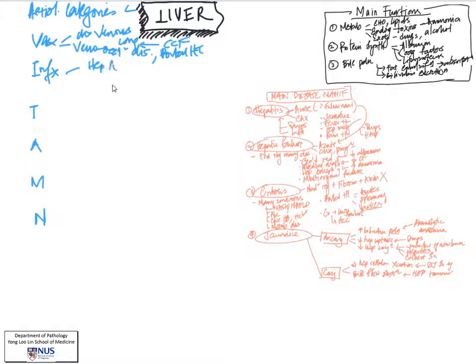I stands for infection, and there's a whole range of infections. We must always remember the hepatotropic viruses. Hepatitis A to E are the most well-known and can give rise to both acute and chronic hepatitis.